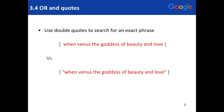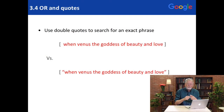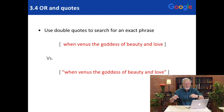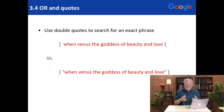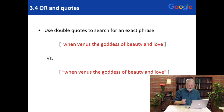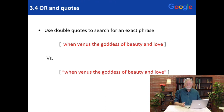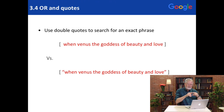We use double quotes for two purposes. One is to find a phrase — a connected series of words that you want to find in that order. We also use it to find a specific or unusual spelling of a specific word. Here's an example: this is a lyric from a song — 'When Venus the goddess of beauty and love' — and I want to find the rest of those lyrics. All I remember is the first line.